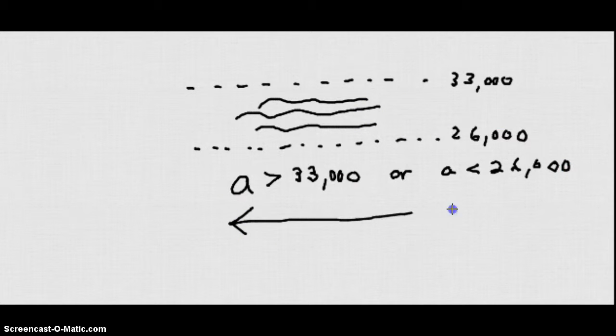Now the plane's altitude should stay either above 33,000 feet or below 26,000 to avoid that turbulence zone. So how we would graph this is we would show 26,000 here, 27,000, 28,000, all the way up to 33,000. A is greater than 33,000 or A is less than 26,000. Notice how your arrows, when you have an OR statement like that, they point in opposite directions.